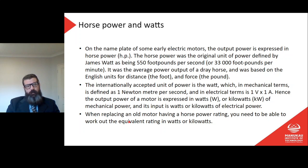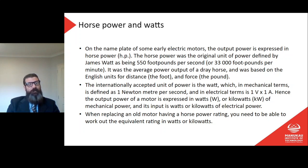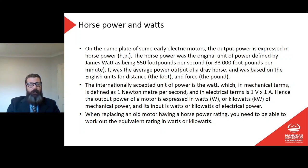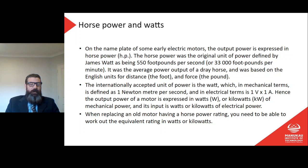On the nameplate of some early electric motors, the output power is expressed in horsepower. The horsepower is the original unit of power defined by James Watt as being 550 foot-pounds per second, or 33,000 foot-pounds per minute — the average power output of a dray horse, based on English units. The internationally accepted unit of power is the watt, which in mechanical terms is one Newton-meter per second, and in electrical terms is one volt times one amp. Hence, the output power of a motor is expressed in watts or kilowatts of mechanical power, and its input is watts or kilowatts of electrical power.